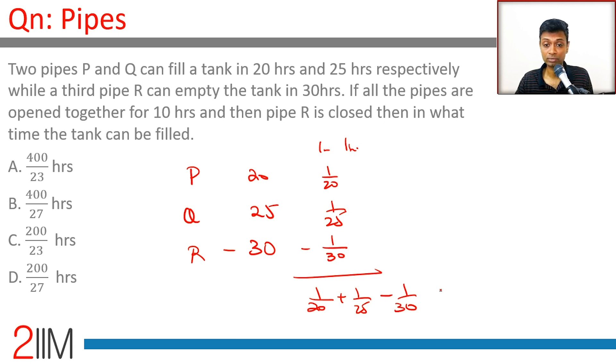Let's assume that pipes P and Q are open for k hours. In k hours, pipe P will fill k/20, pipe Q will fill k/25. Pipe R is kept only for 10 hours, so pipe R would have drained 10/30. The total impact should be 1 - the entire tank should have been filled.